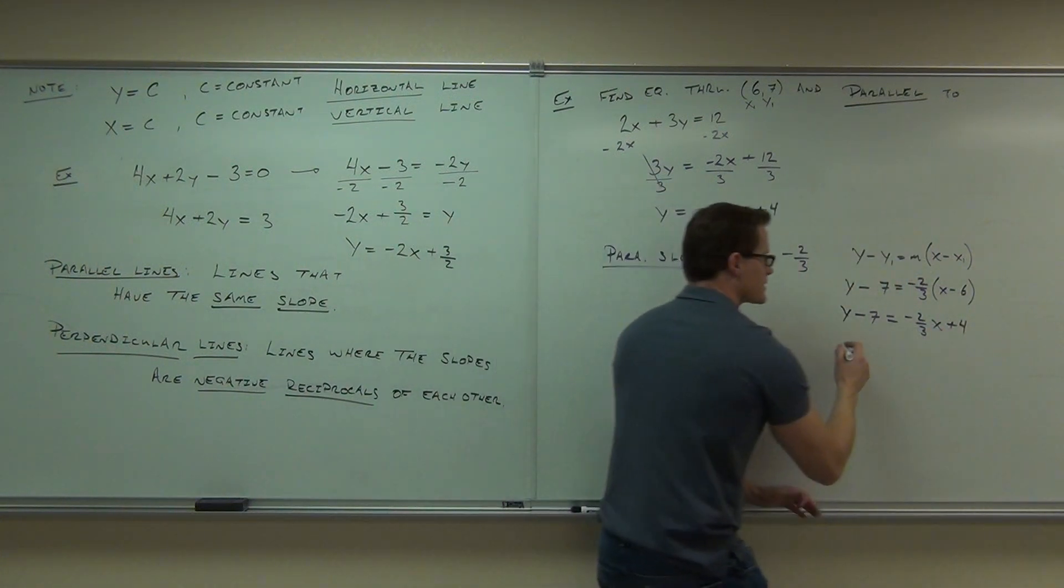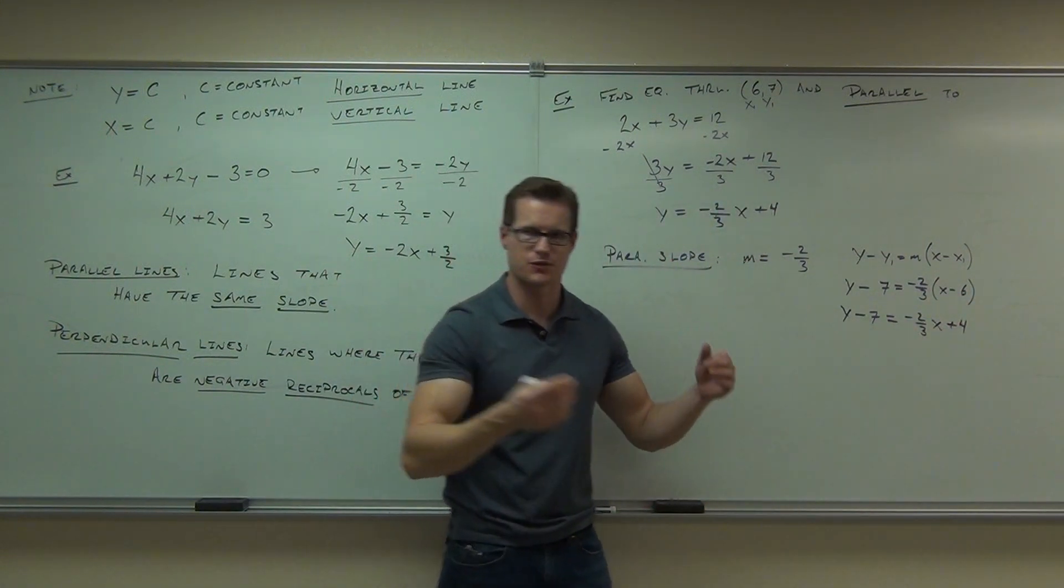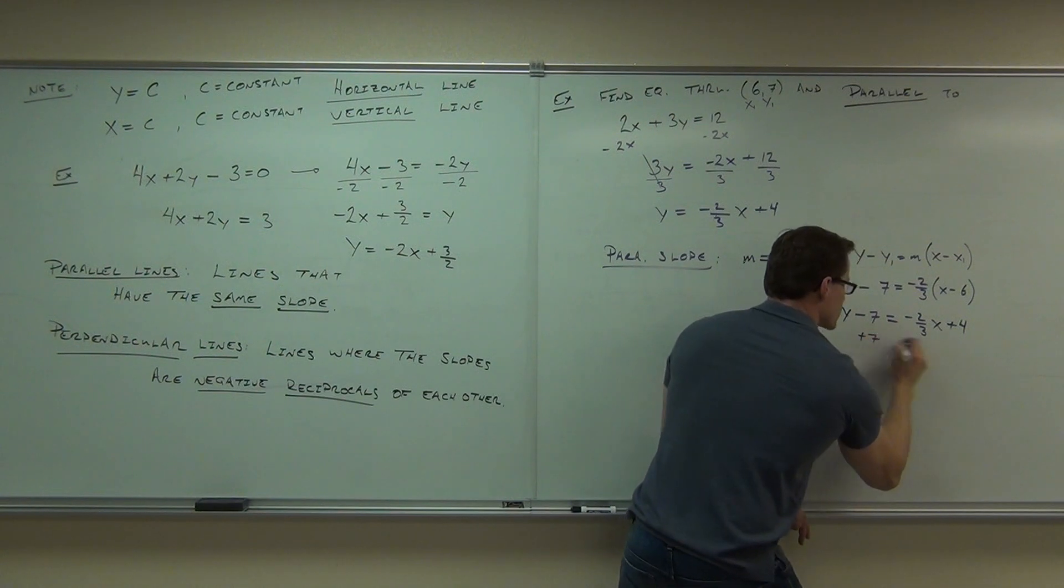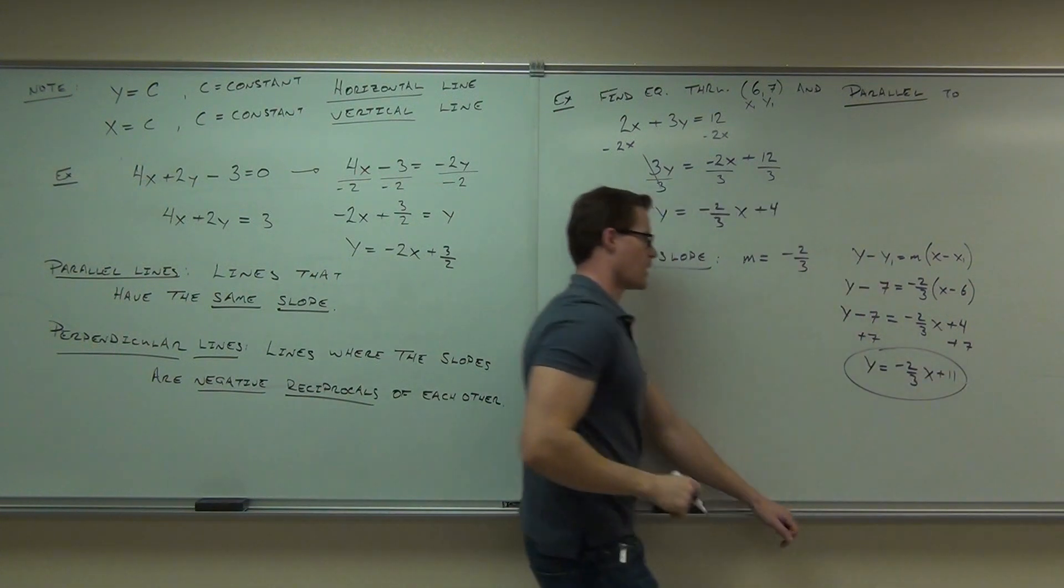Final step, if we add 4 because we get 2 thirds times 6, you can simplify the fractions or we get 12 thirds, that's 4. Add our 7 to both sides. And we're done.